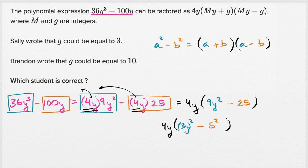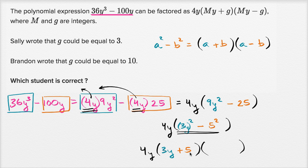So this can be rewritten as 4y, which we factored out at the beginning, times the product of two binomials for this part. And so in this case a is 3y, so it's going to be (3y + 5)(3y - 5). So 3y + 5 times 3y - 5.